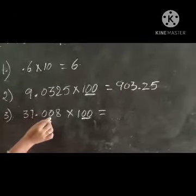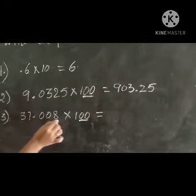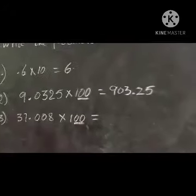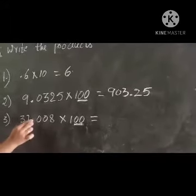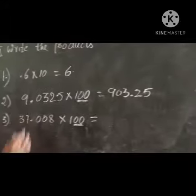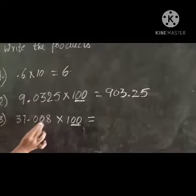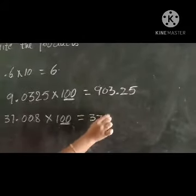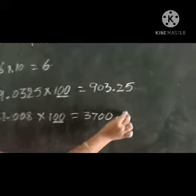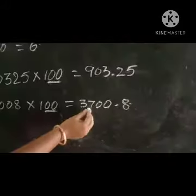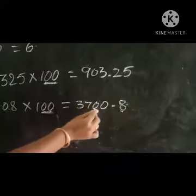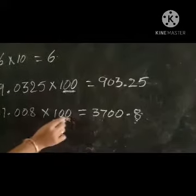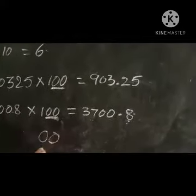Next: 37.008 into 100. Two zeros are there. We have to move the decimal point two numbers to the right. So the decimal point moves from between 37 and 008 — moving two places gives 3700.8.